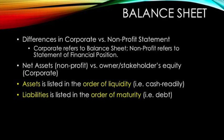Assets are listed in the order of liquidity, meaning items that are more cash-ready are listed at the top of the assets category. Assets that are less liquid, such as inventory — which are not immediately cash-available — are listed near the bottom. Liabilities are listed in the order of maturity; for example, short-term debt is listed at the top and long-term debt at the bottom of the liability section.